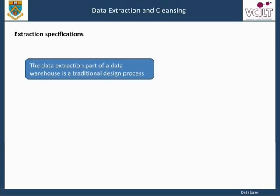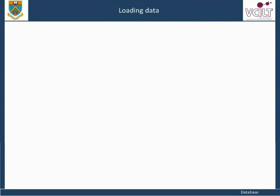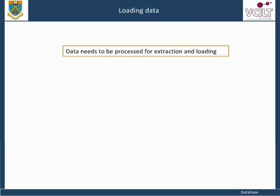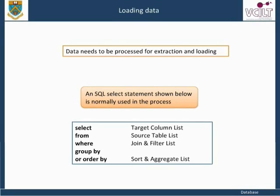The data extraction part of a data warehouse is a traditional design process, with an obvious data flow where inputs are operational systems and the output is the data warehouse. Data needs to be processed for extraction and loading. An SQL SELECT statement is normally used in the process: SELECT target column list FROM source table list WHERE join and filter list GROUP BY or ORDER BY sort and aggregate list.